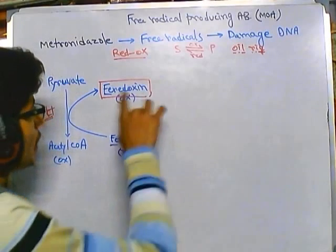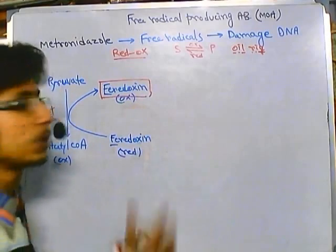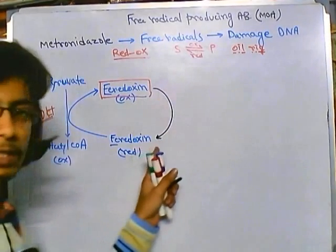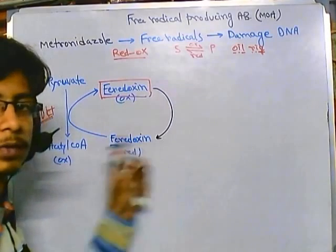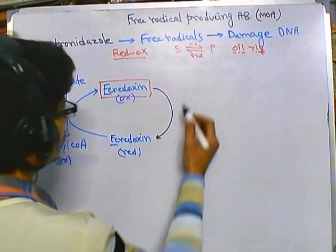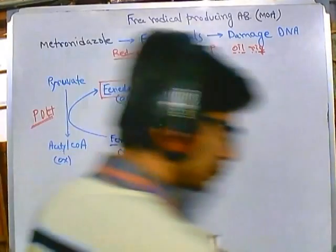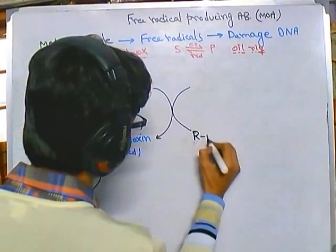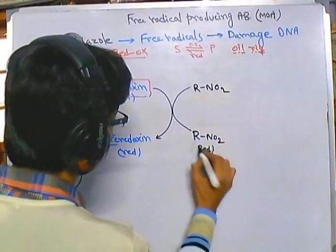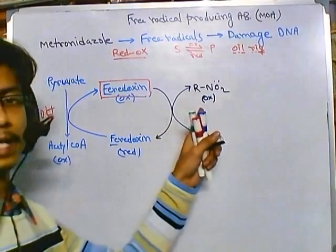We get oxidized ferredoxin from this process. This oxidized ferredoxin must return to its reduced form so the reaction can occur again and again in a circular manner — it needs to reset back to the reduced form. As it returns to the reduced form, it needs to oxidize something else. It will oxidize a molecule called RNO₂, which is in the reduced form, converting it to the oxidized form.